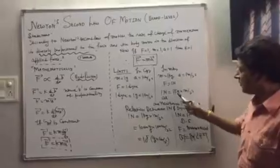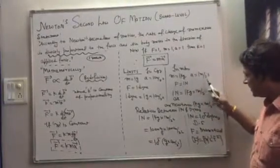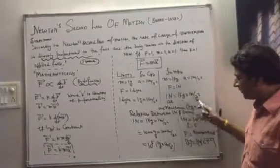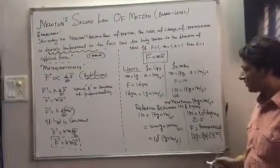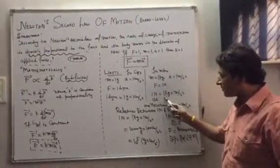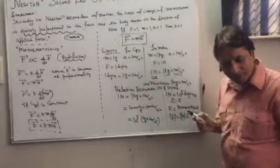In MKS units: mass 1 kg, acceleration 1 meter per second squared, then force is 1 Newton. 1 Newton equals 1 kg times 1 m per second squared. Force is said to be 1 Newton when it is applied on a mass of 1 kg and produces an acceleration of 1 m per second squared.